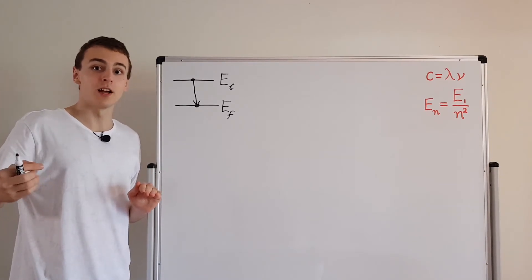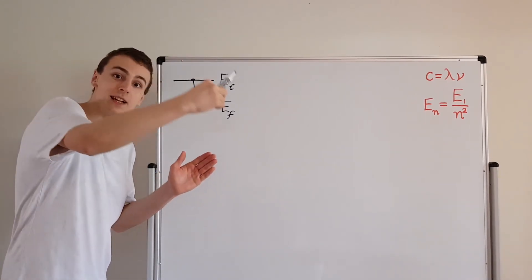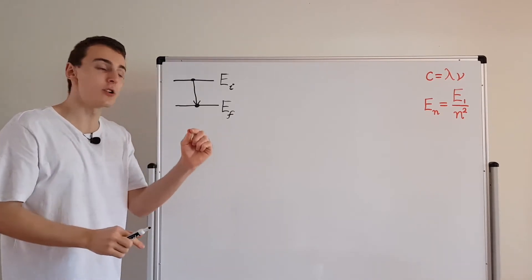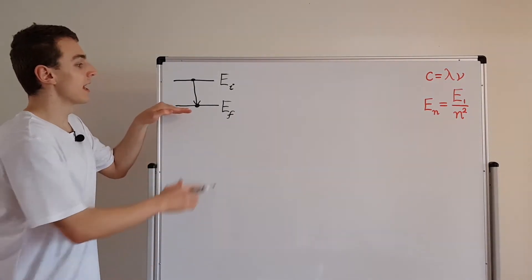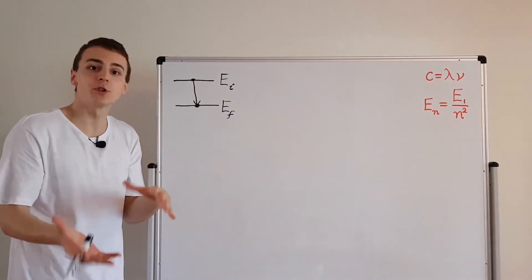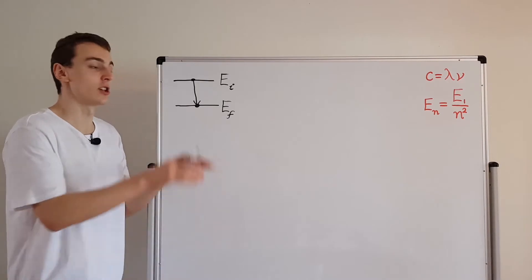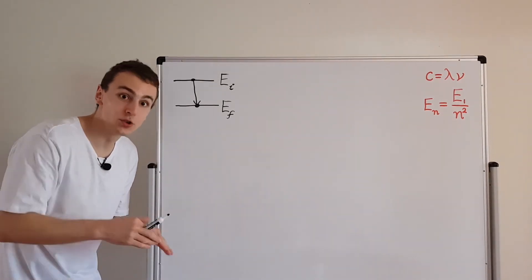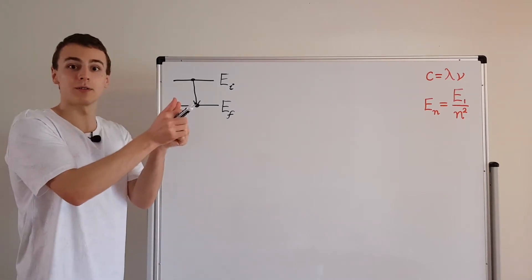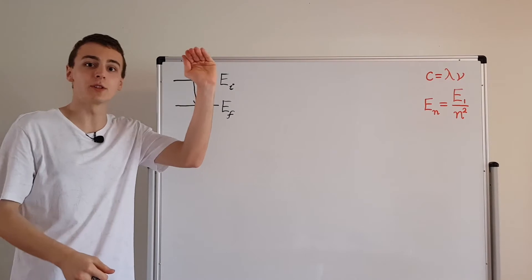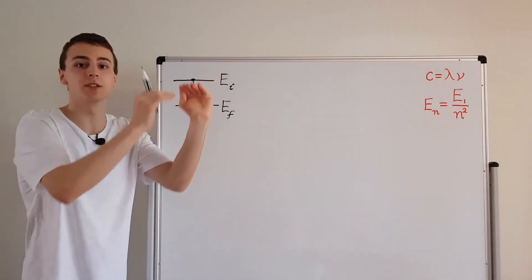So emission is going from a higher state to a lower state and releasing a photon. Absorption is the opposite. Absorption is a photon comes in to the atom, and it hits an electron, and it gives it just enough energy to jump from a lower state to a higher state. So emission and absorption are kind of like mirror images of each other. Emission is dropping and releasing, and absorption is absorbing and then popping up, so jumping up to a higher level.